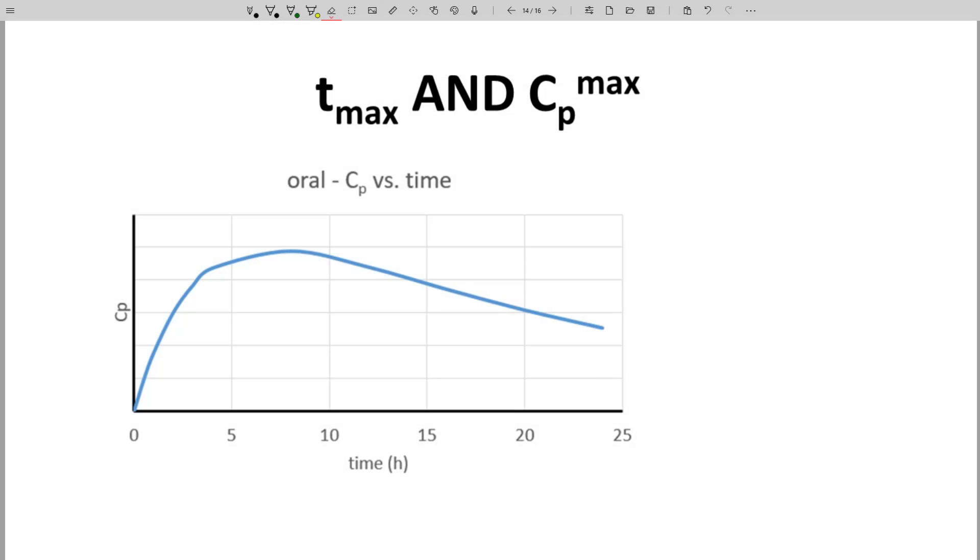Determining PK parameters requires both IV and oral CP time data. We've seen how IV data are useful for determining half-life. What do we use oral data for? Two things we can determine are CPmax and Tmax.